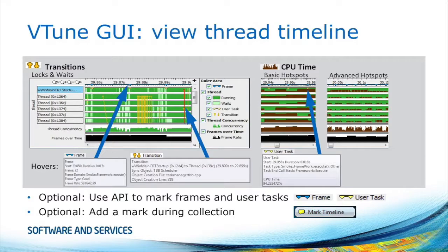The other thing is, anytime you take a lock in your code, what you will see is transitions between your threads telling you why a thread transitioned to another thread. For instance, it tells you that there was a sync object — in this case it was the TBB Threading Building Block Scheduler — and in the object it was syncing on was in task manager TBB CBP line something. Anytime you take a lock it will tell you which thread caused the waiting on the lock — who was waiting and who was the owner of the lock when this particular thread started waiting.